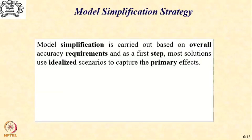We are going to use an idealized scenario to capture the primary effects. We divide the whole analysis into three segments: primary effects — the most dominant physical effects deciding performance — then secondary, and then tertiary at a further lower level. We first generate the solution for the primary effect, then correct it for the secondary effect, and then assess whether tertiary effects need to be taken into account. Even while including secondary and tertiary effects, we use simplified representations that do not require too much computational effort but still give an order-of-magnitude understanding.